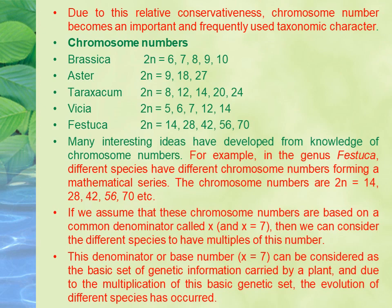Now if we look at Festuca species, we have chromosome numbers 14, 28, 42, 56, 70 — this forms a mathematical series with a basic number of 7. So 7×2=14, 7×4=28, 7×6=42, 7×10=70. This means if a plant has a basic chromosome number of 7, it is likely related to Festuca.